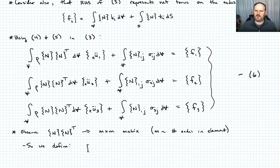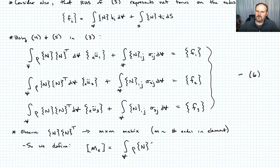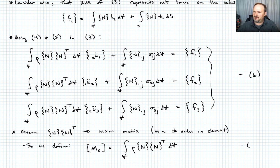We define the quantity M_s — a submatrix of the total mass matrix we'll talk about in a little bit — as M_s equals the integral over the volume of rho times N times N^T dV. Call that equation 7.